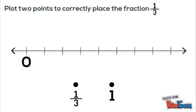One last example. We're told to plot 2 points to correctly place the fraction 1 third. Now we're told the fraction, so we start by looking at the denominator, which tells us how many equal parts or gaps there are that make a whole. So we know that we need 3 gaps to make 1 whole. So we put the dot for 1 at the spot where our 3 gaps are.